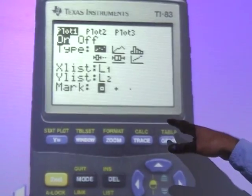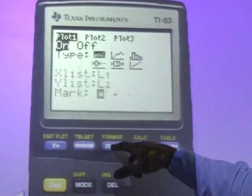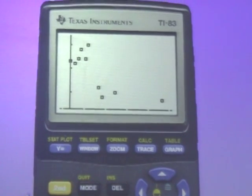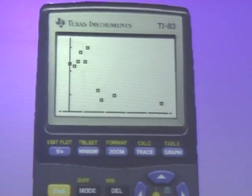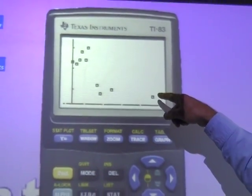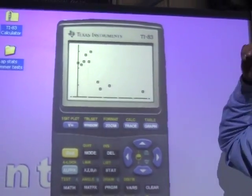I can hit graph, but to set the window perfectly, I like to hit zoom 9, and here it is. So to me, it seems to be definitely negative, fairly straight, except for this, you know, this might be an outlier. It seems there's this negative thing. We might have an outlier here.